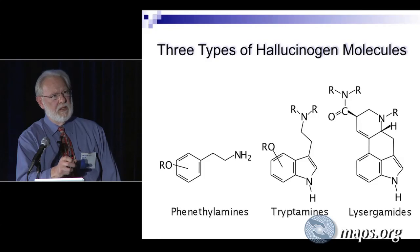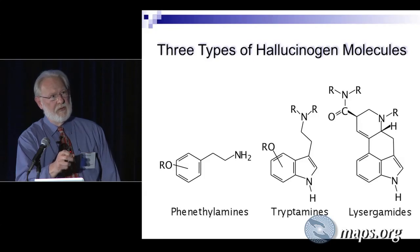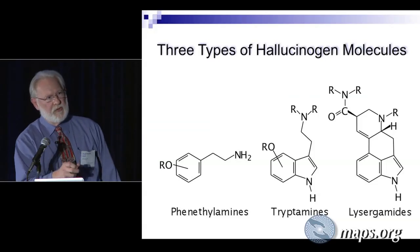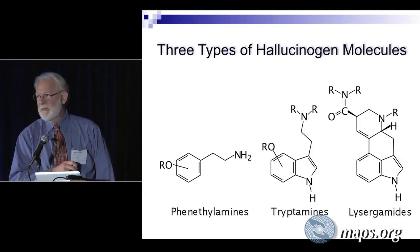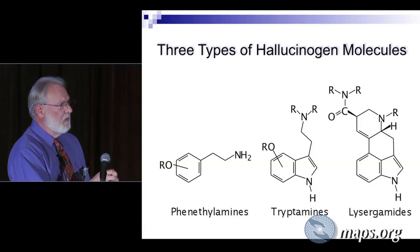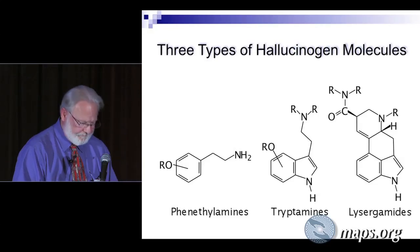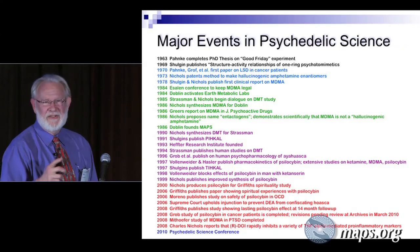LSD is one of the most potent hallucinogens. The most potent at this point is probably a compound we developed years ago called ethylad, where we changed this R group from a methyl to an ethyl — it's a little bit more potent than LSD, but also a little harder to make, so you haven't seen it.